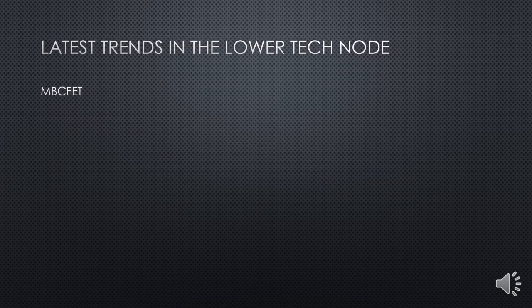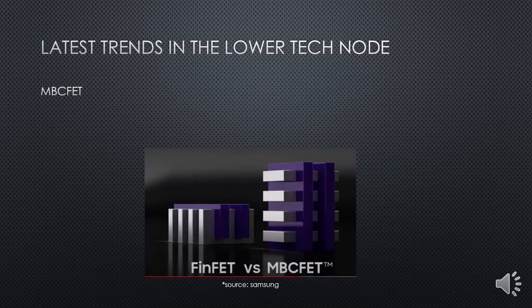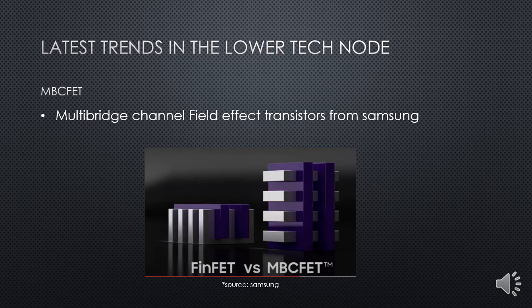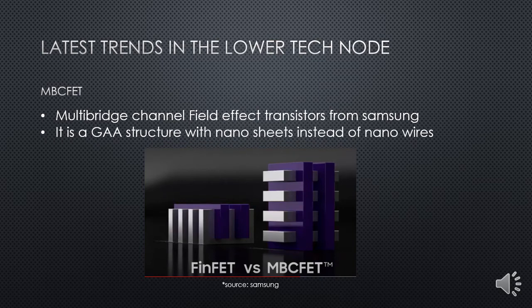Now, some of the latest trends in lower technology nodes. One such thing is MBCFET — Multiple Channel Field Effect Transistors — from Samsung. Instead of using nanowires or fins, it uses stacked structures. This is essentially a gate-all-around structure, but the nanowires are now converted to nanosheets. This nanosheet-based gate-all-around transistor is the latest advancement from the Samsung family.